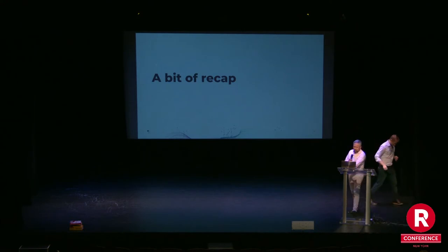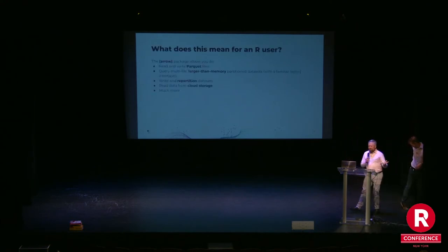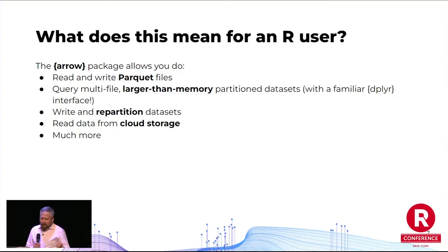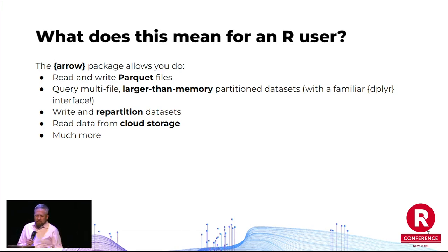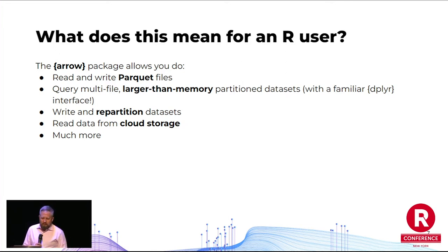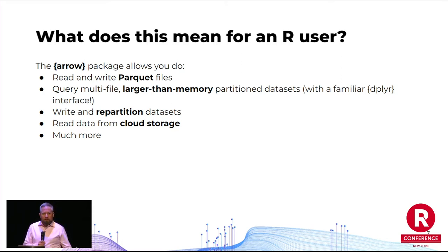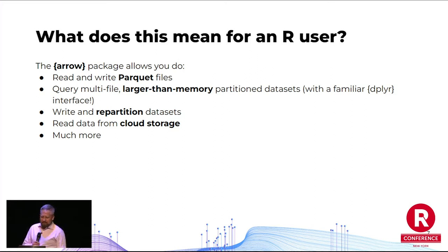Thanks, Wes. So, a bit of a recap. What does this mean for me as an R user? How does Arrow help me? The Arrow R package lets you unlock a bunch of abilities to read large amounts of data quickly and even use query engines that rely on the Arrow format and Arrow interchange. Concretely, you can read and write Parquet files, query large multi-file data sets that don't typically fit in memory, write and repartition those data sets efficiently, and read data from cloud storage — among many other things.